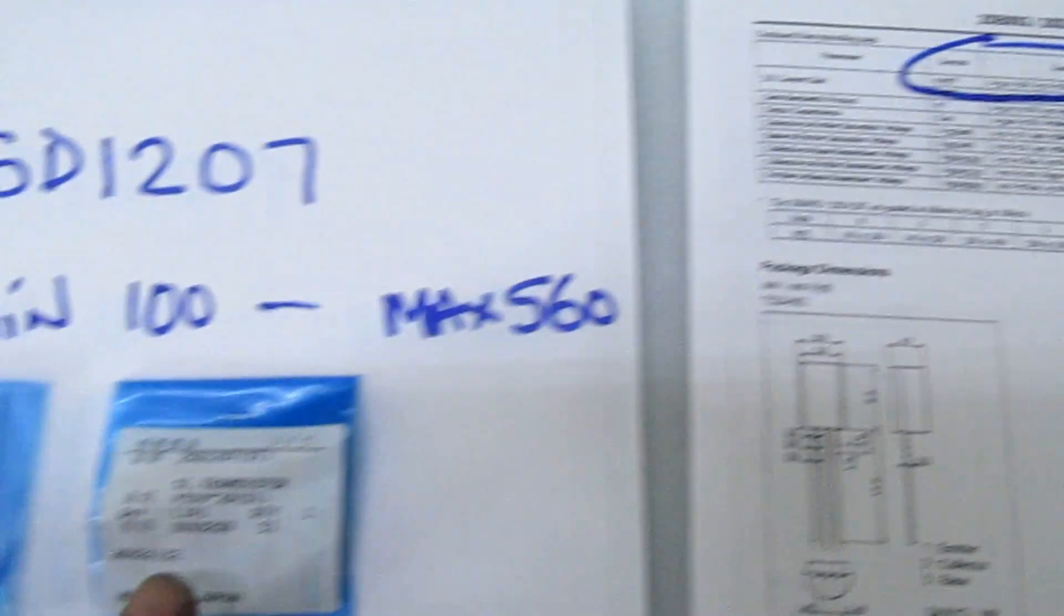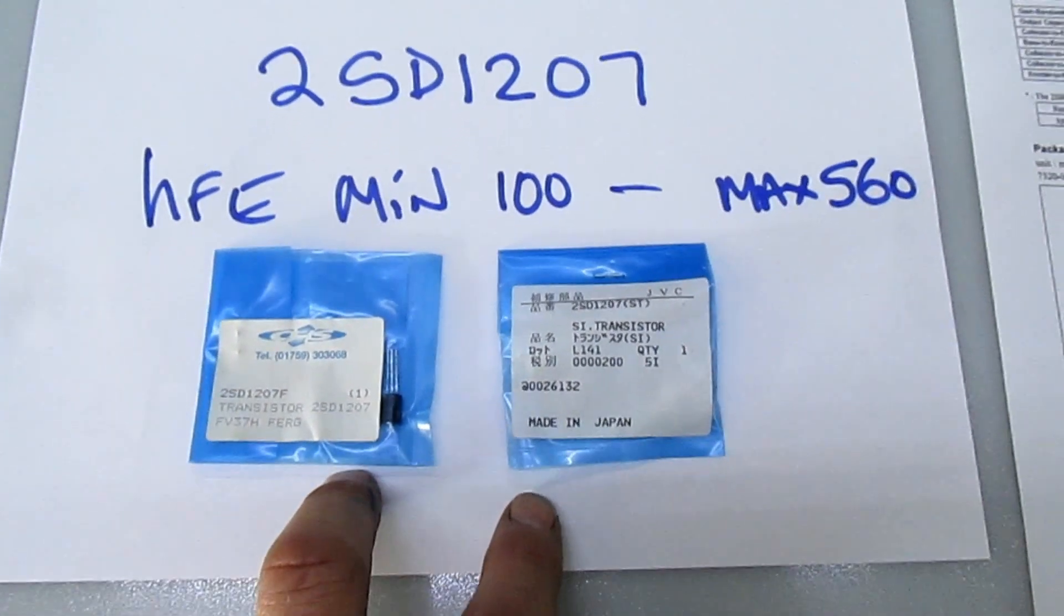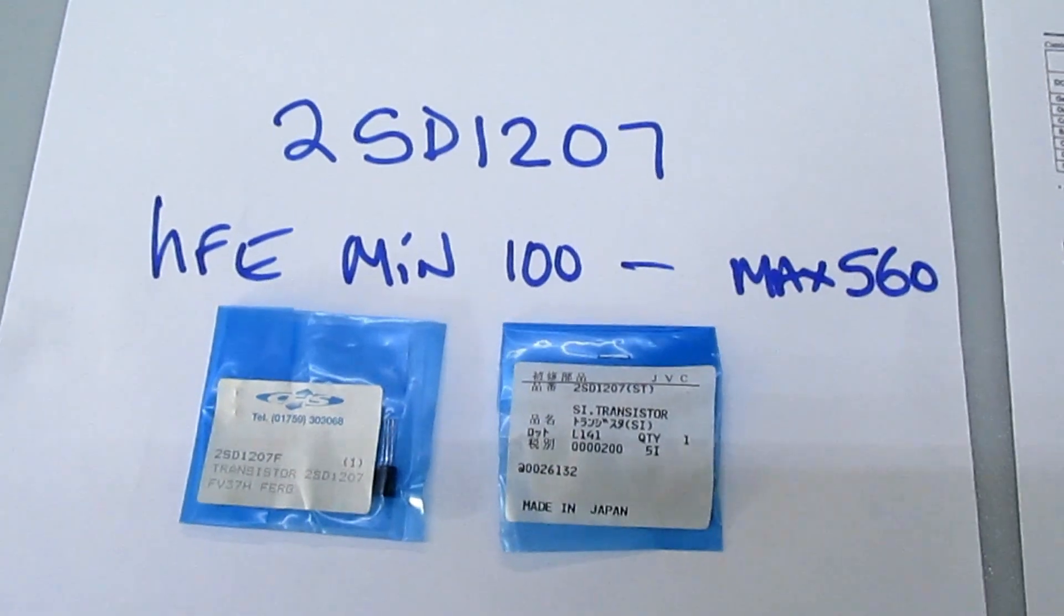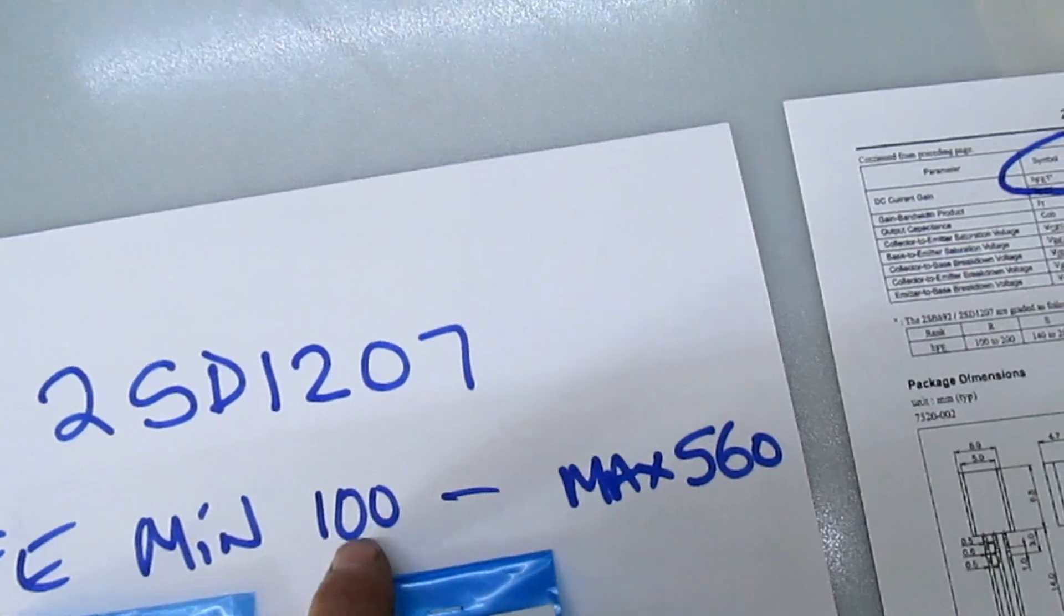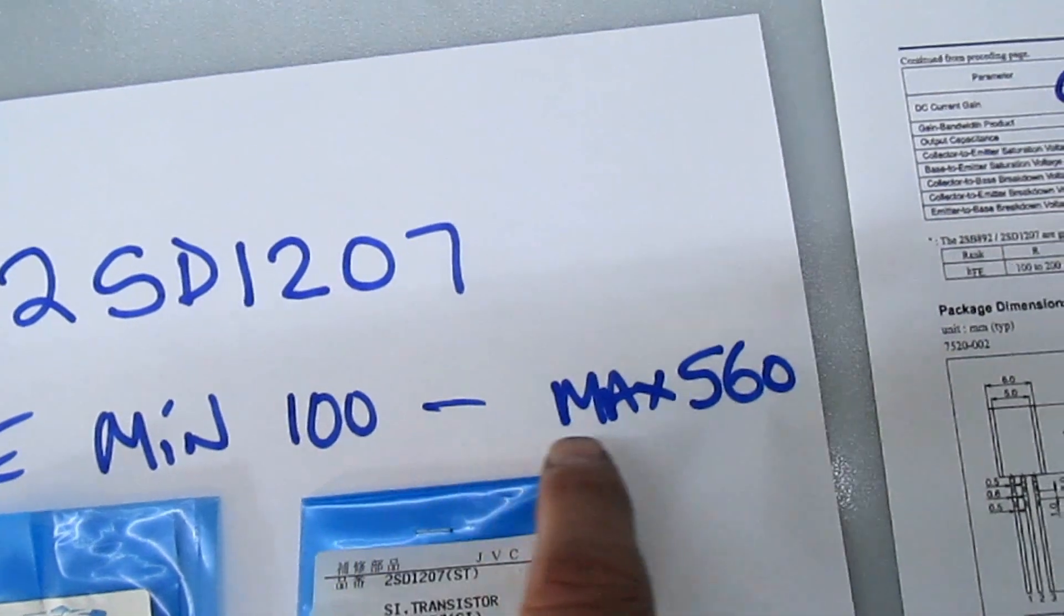If you can imagine thousands of these coming off a production line, what the manufacturers will do is run all these tests. Taking this one for an example, if it falls outside of the minimum and maximum parameters for the current gain, it goes into the reject bin.